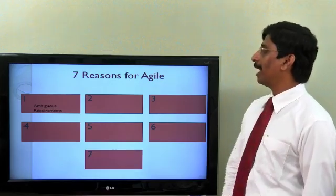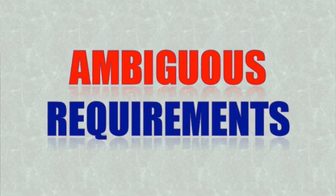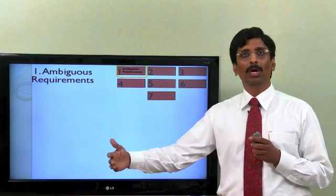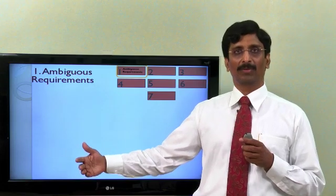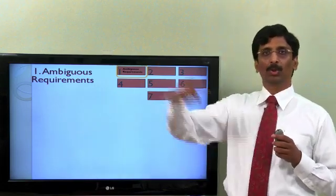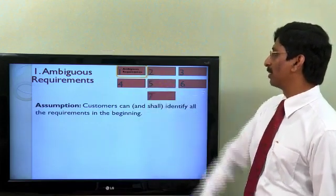The first one, ambiguous requirements. This is the most common issue as we discussed earlier. See, most of these issues that we discussed earlier do come because of some assumptions we have in the traditional software development lifecycle. So, if you go and question the assumption, probably those issues may not be there. So, let's start with the assumption for ambiguous requirements.